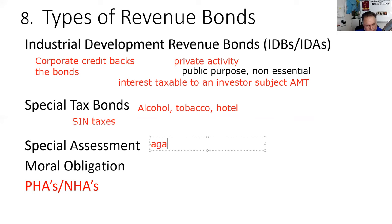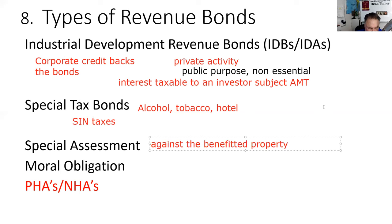Special assessment bonds are assessed against the benefited property. On Highway 99 in California, a fork in the road leads to Sacramento or San Francisco. A Flying J Truck Travel Plaza in Ripon, California wanted Caltrans to revamp the freeway system to make it easier for 18-wheelers to access their facility.